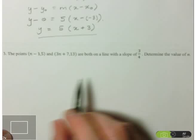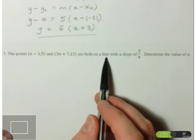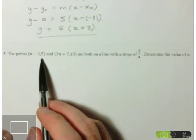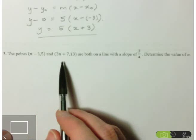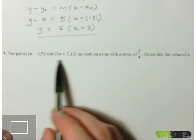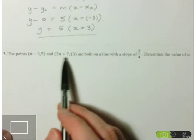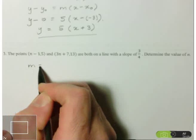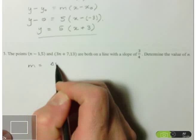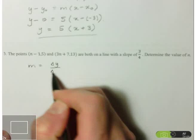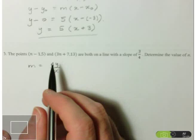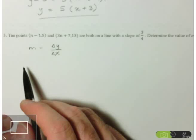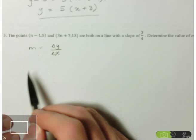Now let's look at number 3. We're given two points on a line that has a slope of 3/4. These points contain an unknown n, and that's what we're looking for. It might not be obvious how to solve this, so we want to find something that relates all the given information — two points and a slope. The slope formula, m = delta y over delta x, connects all three things and lets us create an equation to solve for n.